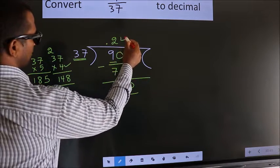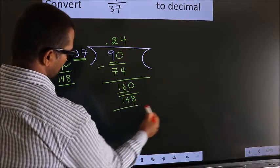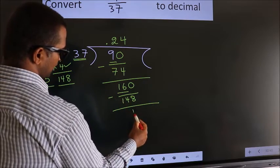So, 37 4 times. 148. Now, we subtract. We get 12.